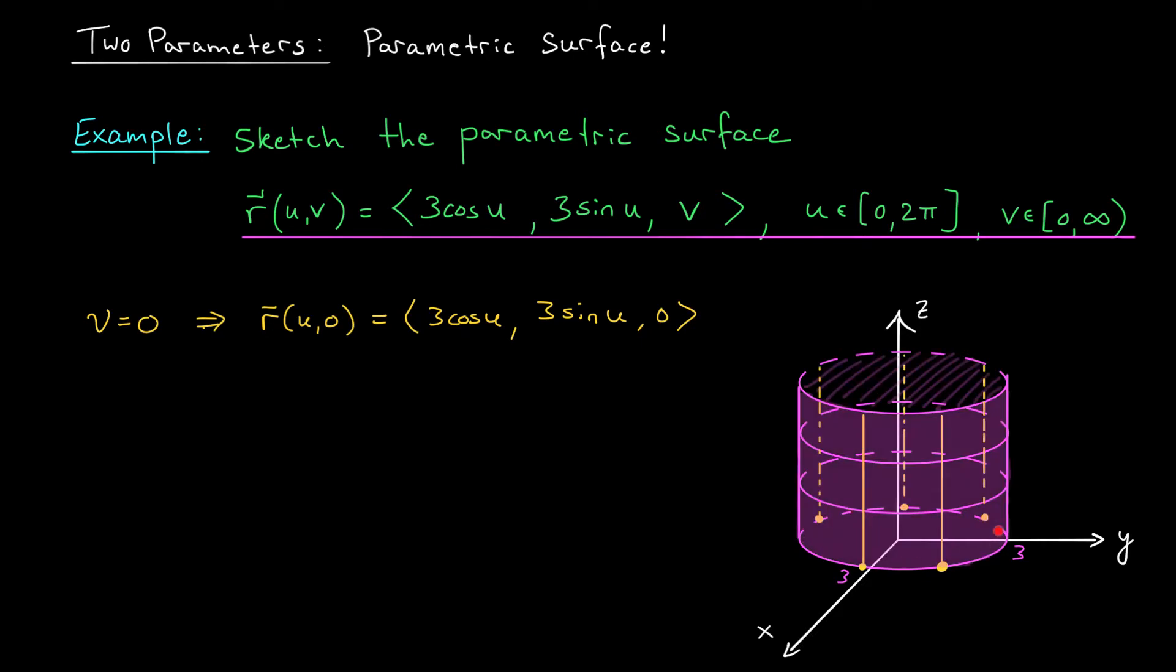These curves, by the way, are often referred to as grid lines. The circles are the curves that you get by setting V equal to a constant, and the vertical lines are the curves that you get by setting U equal to a constant. Very reminiscent of cross-sections and level curves, isn't it?